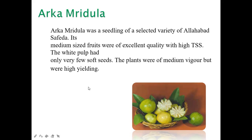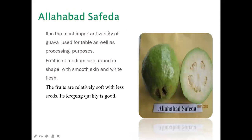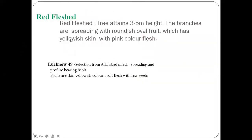Allahabad Safeda is the most important variety for both table and processing purposes. The fruit is medium-sized, round, with smooth skin and white flesh, relatively soft with few seeds and good keeping quality. Red-fleshed varieties have trees three to five meters high with spreading branches and yellowish skin with pink flesh. Lucknow 49 is a selection from Allahabad Safeda with spreading and profuse bearing habit, yellow skin, and soft flesh with few seeds.